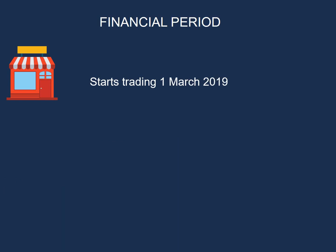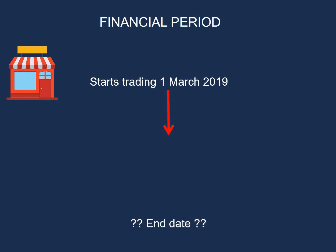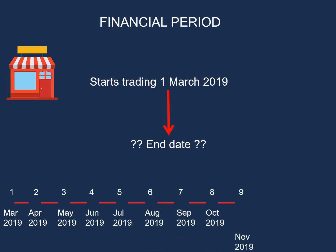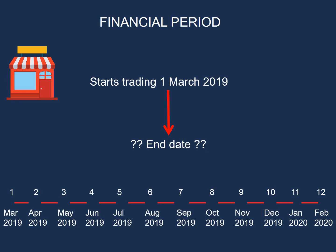This business starts trading on the 1st of March 2019. After 12 months it needs to prepare its financial statements, but what is the end date? The 1st of March 2019 is our start date, with March being our first month. The 2nd month will be April, the 3rd May, the 4th June, and so forth until we arrive at the 12th month, which is February 2020 — and that will be our end date.